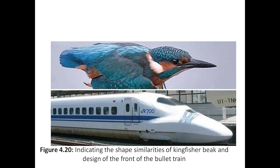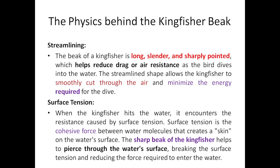This is exactly how the bird looks — the kingfisher beak. A similar structure was copied and inspired the design of the bullet train. Specifically in Japan, some bullet trains are exactly a replica of this particular bird. Now let us look at the physics behind the kingfisher beak.